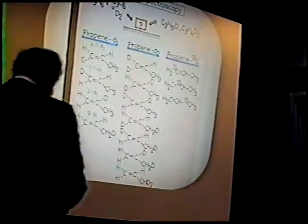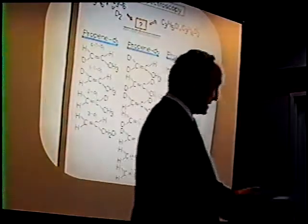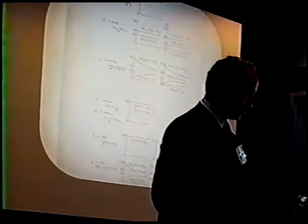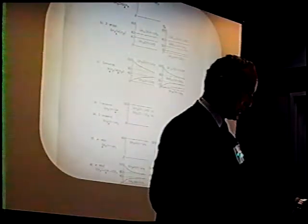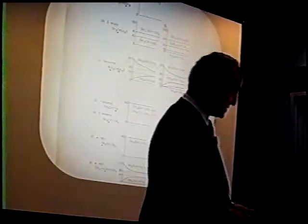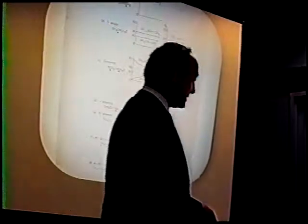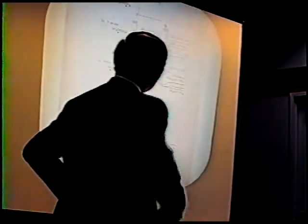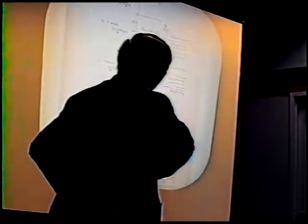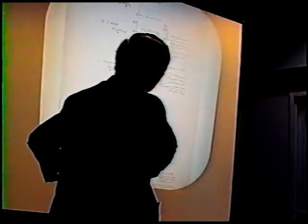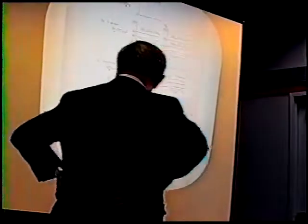Suppose we have propylene and a deuterium atom, or D⁺ or D⁻. There are exchange reactions between hydrogen in propylene and such deuterium. If the reaction intermediate is one propylene species...